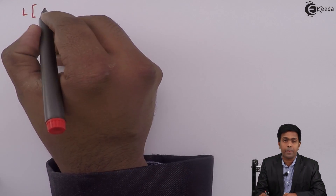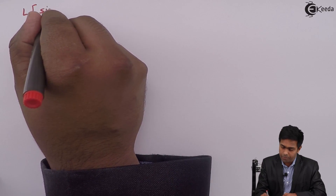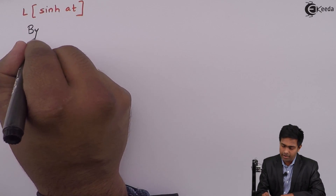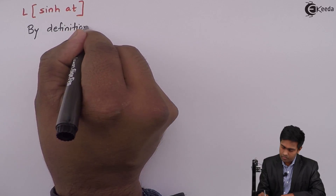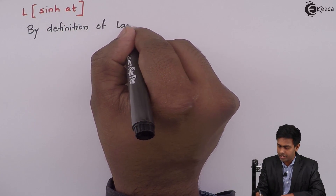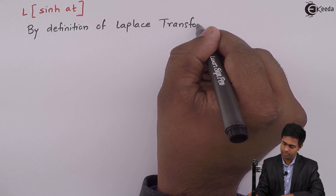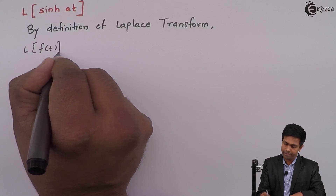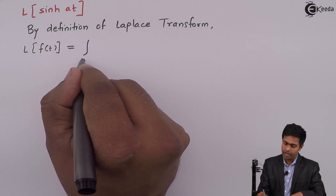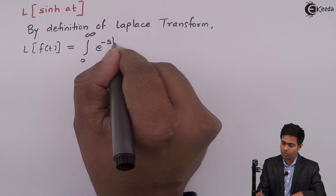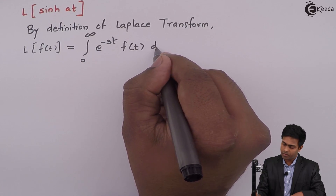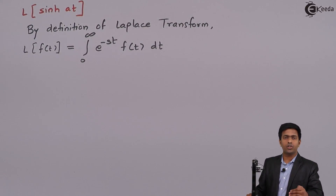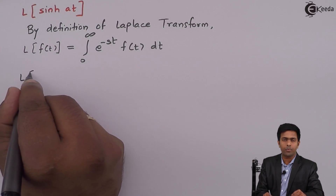I want to find out the Laplace transform of hyperbolic sine at. We will start with the definition. By the definition of Laplace transform, we have: Laplace of a function f(t) is equal to the integral from 0 to infinity of e raised to minus st times f(t) with respect to t.